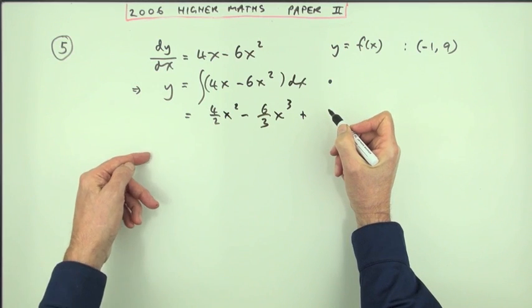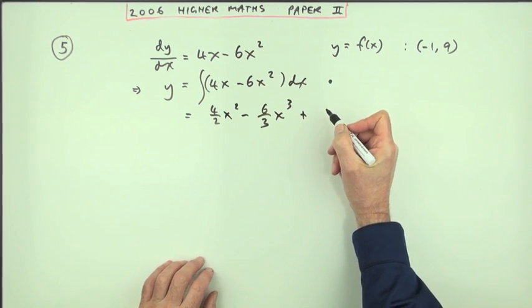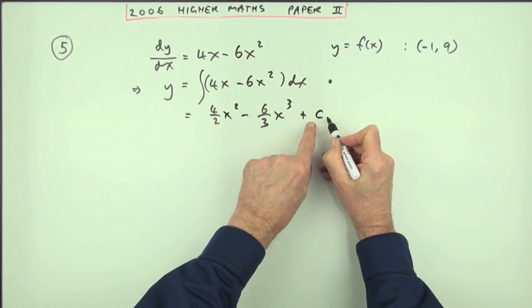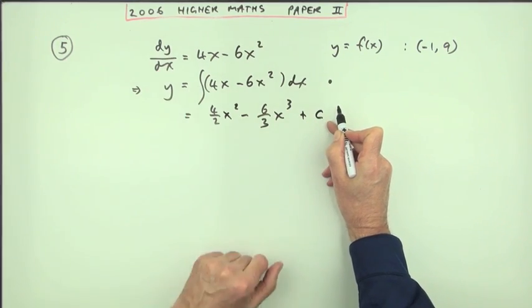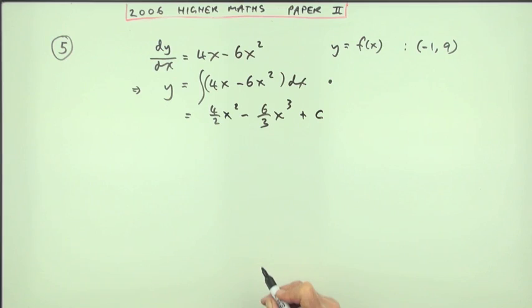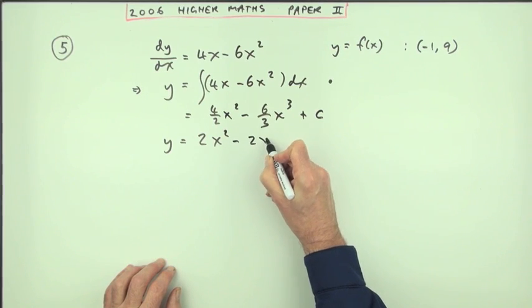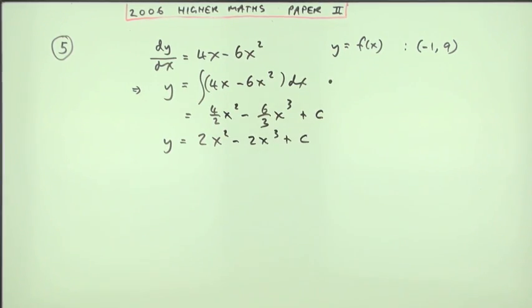because that's what the following two marks are for. Don't forget that there could be some constant which would have disappeared when you were differentiating. That's why there's nothing here. So y equals 2x squared minus 2x cubed plus c.